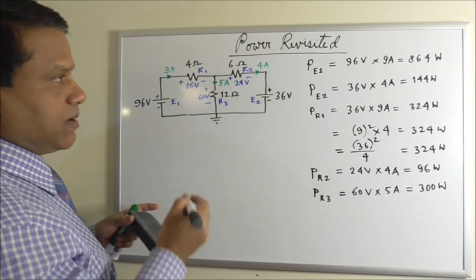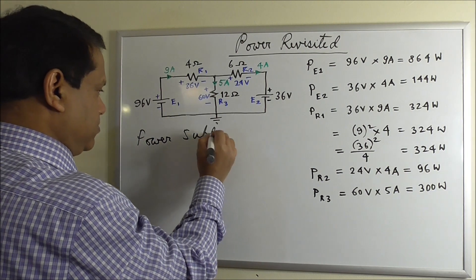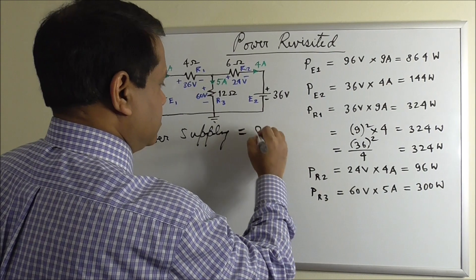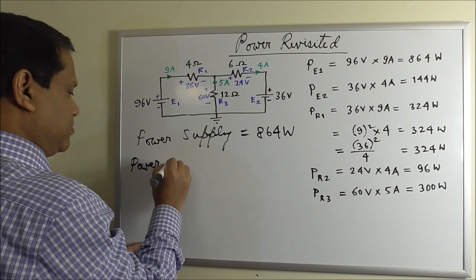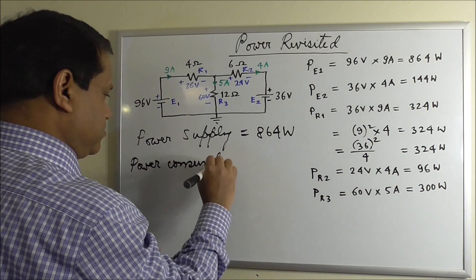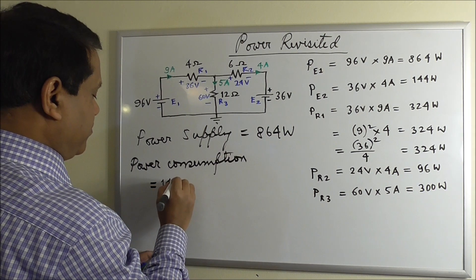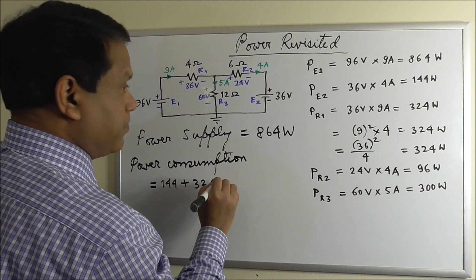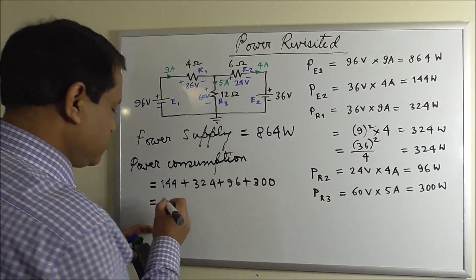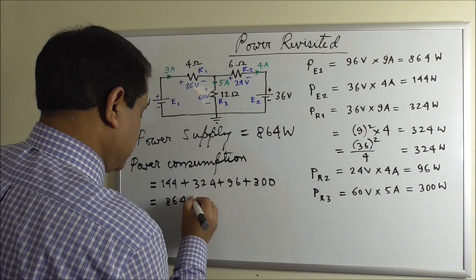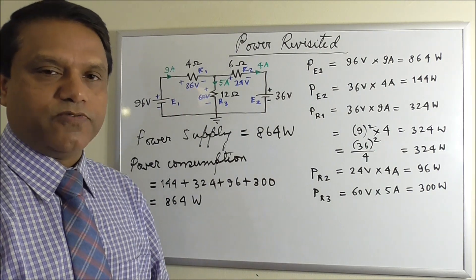So the total power supply is 864 watt. And power consumption is 144 plus 324 plus 96 plus 300 equal to 864 watt. So power supply is equal to power consumption. It has to be true for any electrical circuits.